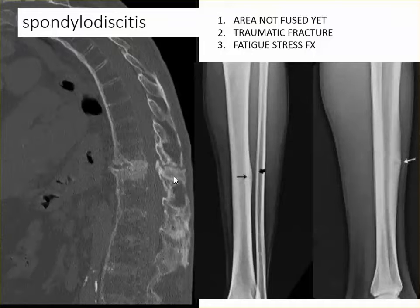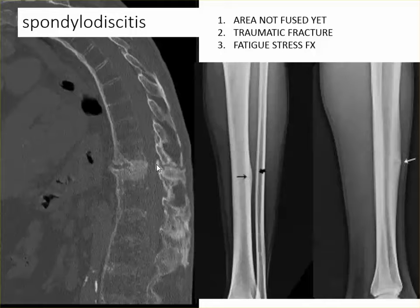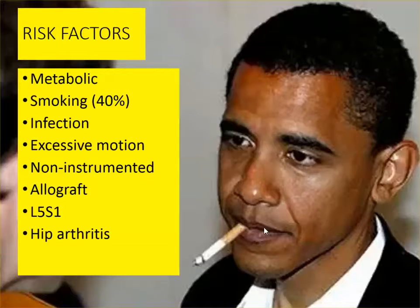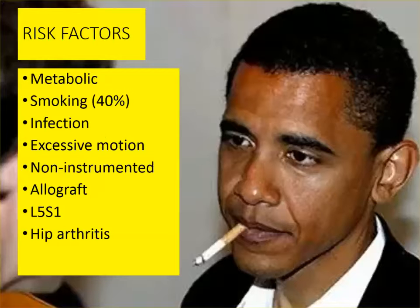Spondylodiscitis in ankylosing spondylitis, I believe, is a stress fracture. You can see the stress fracture in the tibia of a basketball player — it's a very long bone with a long lever arm that can fail, and it just keeps failing over time. Then it tries to heal itself and develops a hypertrophic nonunion. Risk factors for nonunion are cigarette smoking, metabolic disorders, infection, excessive motion, implant failure, non-instrumented allograft, and hip arthritis.